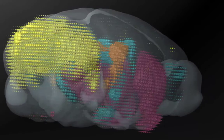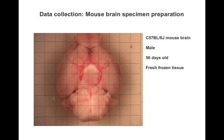For the mouse adult gene expression data set available from mouse.brain-map.org, the model system used was a male C57 black 6 mouse at postnatal day 56. Each mouse used in this study was housed and treated identically to ensure a baseline gene expression pattern.